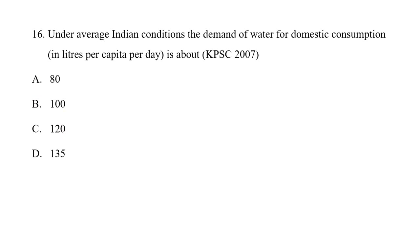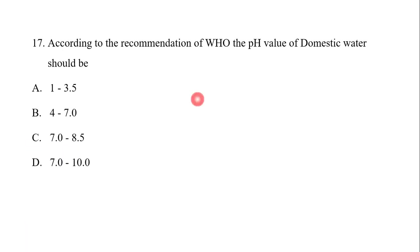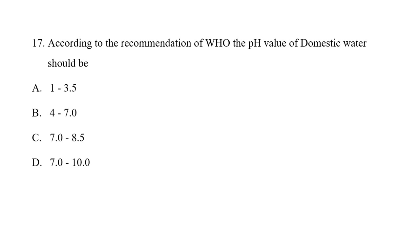Under average Indian conditions, the demand of water for domestic consumption is about 135 LPCD. According to the recommendation of WHO, the pH value of domestic water should be between 6 to 8.5. Here we have 7 to 8.5, so the answer is option C.